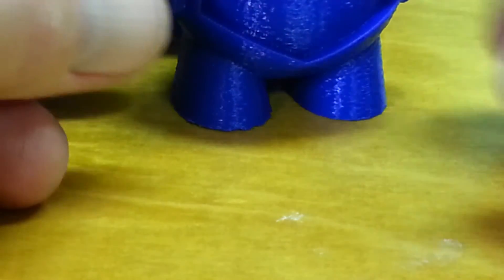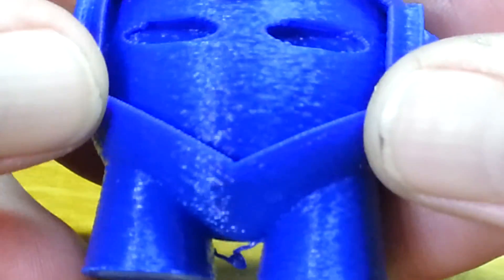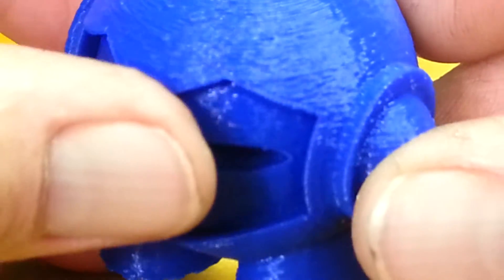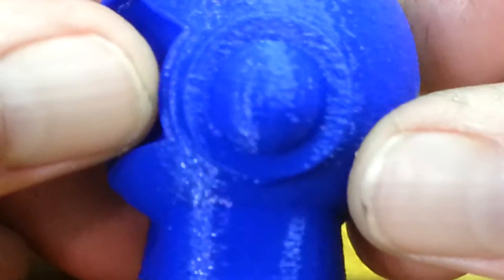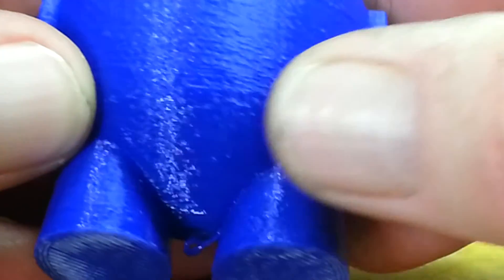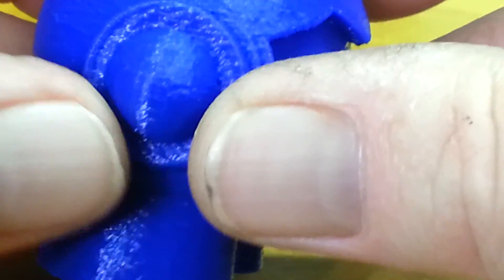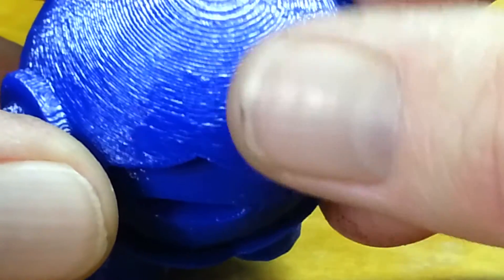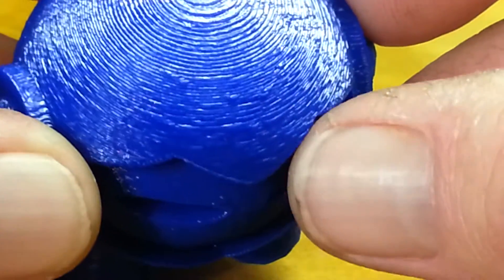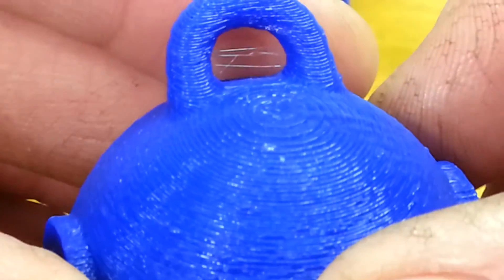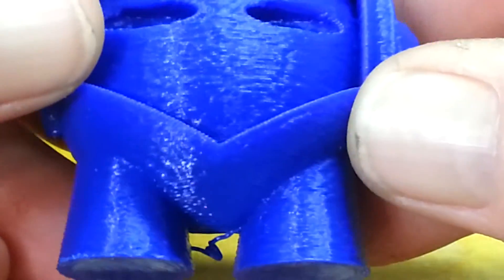So that brings us to the 0.2 layer height. Now, the 0.2—maybe I should have started with 0.2 and then worked my way up, but to me it looks a lot rougher. But for the most part, it's still a very nice print. You can see the lines are a lot more detailed on this one. You can see a lot more of the ridges and lines and everything. But it still turned out really nice. I'm really happy with that.